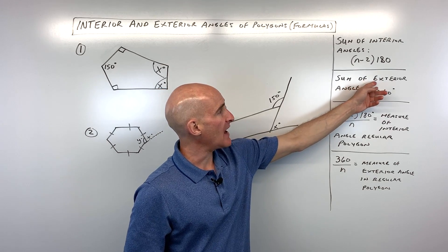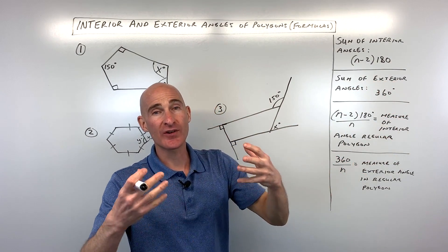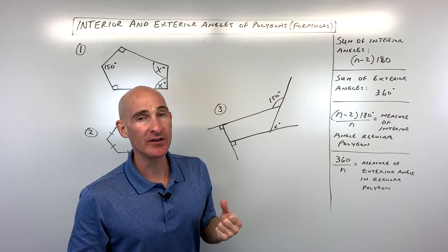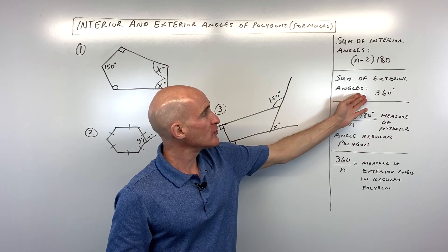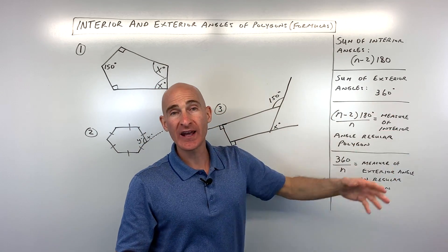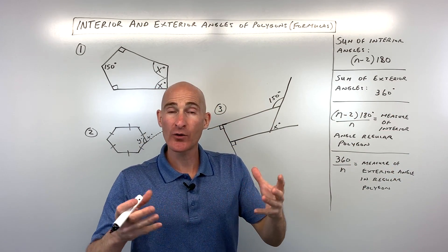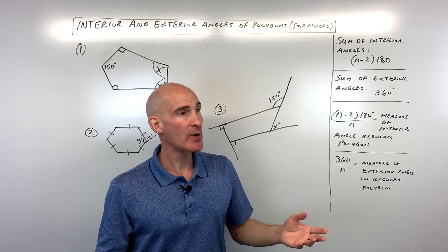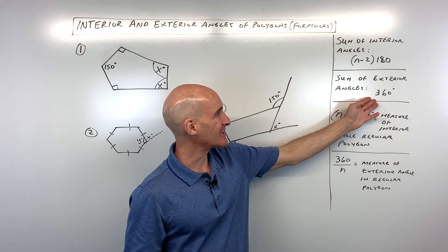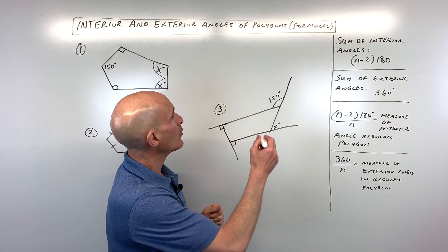With the exterior angles — the angles on the outside of the polygon — all those angles are always going to add up to 360 degrees, no matter whether it's a regular polygon or not a regular polygon. The exterior angles always add up to 360.